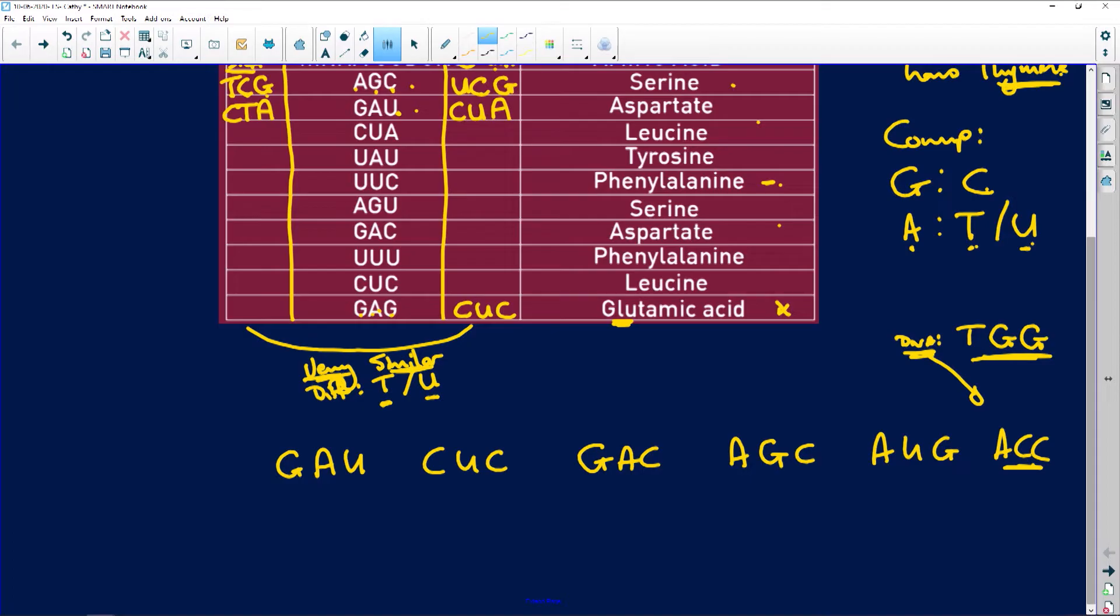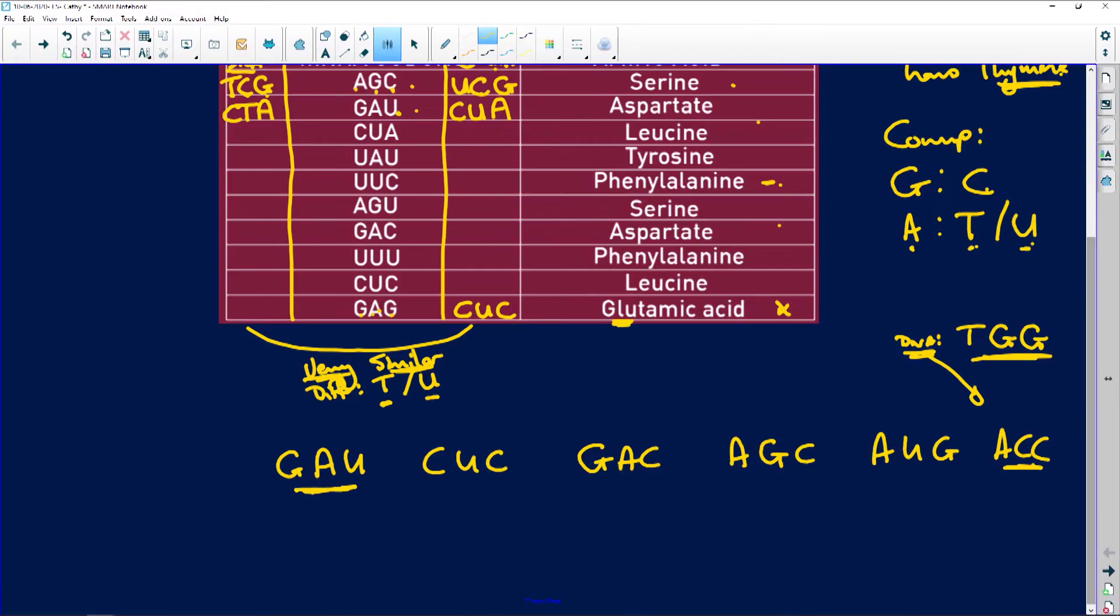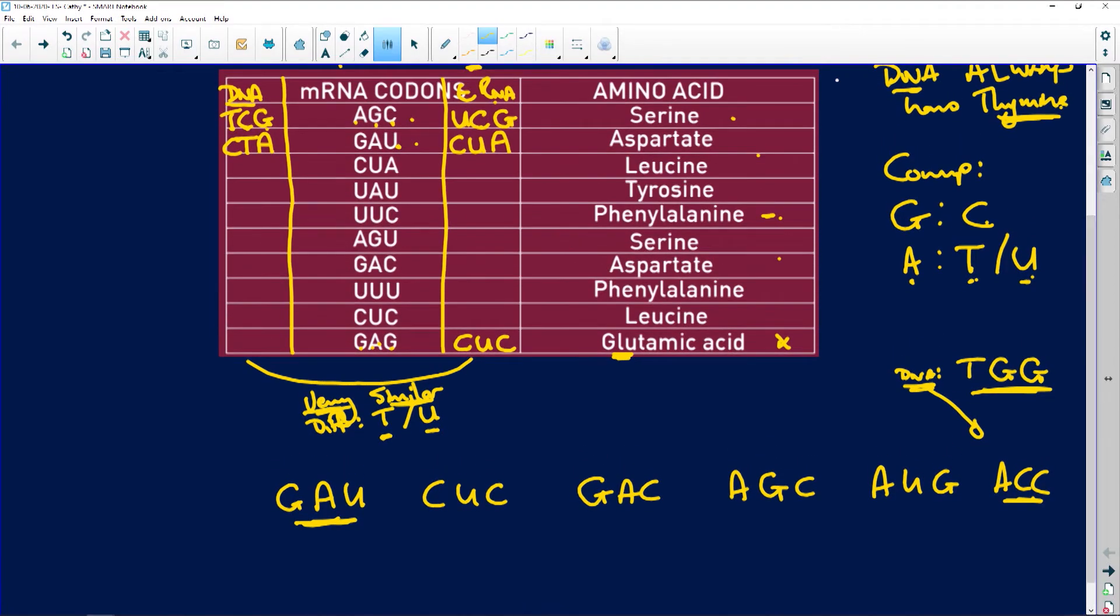Then it says the first amino acid coded for by this section of messenger RNA. So here the first one is, and they want to know the first amino acid, that's simple. Because all we do now is we go up here, and we look for GAU. There we go, there's GAU, and it would be aspartate. And that's what you would write, so this here would be aspartate. Remember complementary: guanine to cytosine, adenine to thymine when it is DNA, and adenine to uracil when it is RNA.